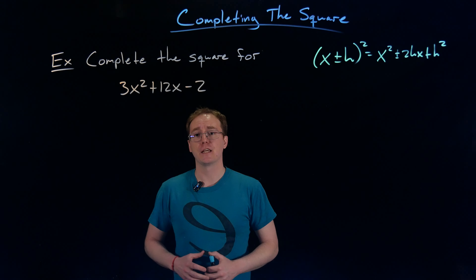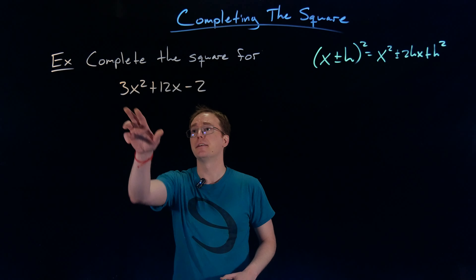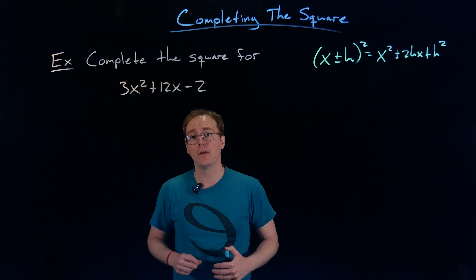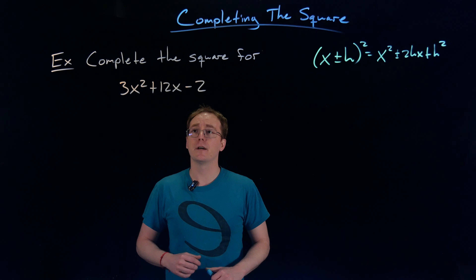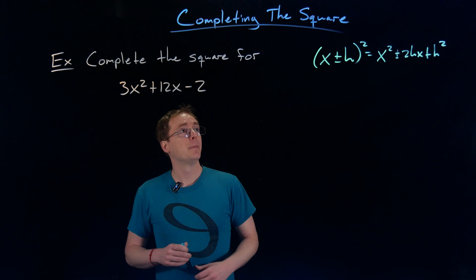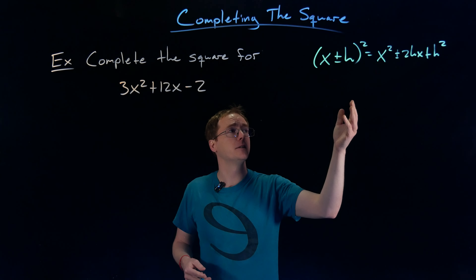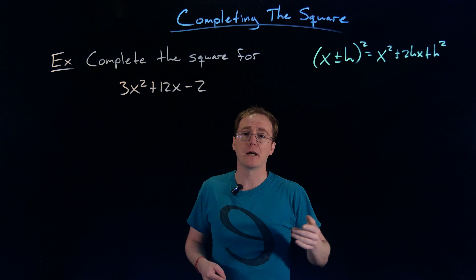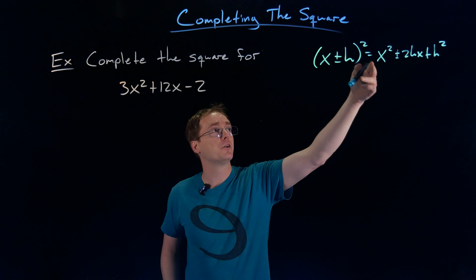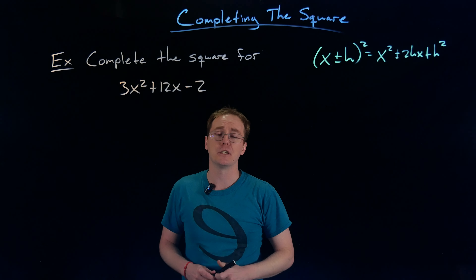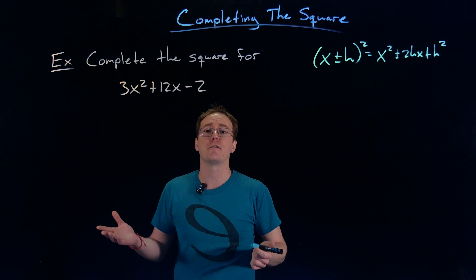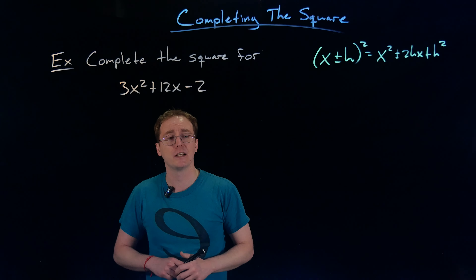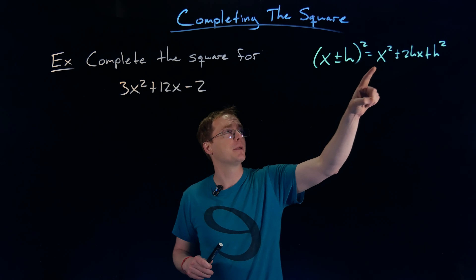All right, let's look at another example of factoring by completing the square. This one's going to be trickier because now we don't have that leading coefficient of positive 1 that always makes the problems a little bit easier to work with. In this example, we're trying to complete the square for 3x squared plus 12x minus 2. That pattern we're trying to exploit — going from a binomial squared to a perfect square trinomial — usually starts by thinking about that perfect square trinomial as having just an x squared, or a leading coefficient of positive 1. So if we do have something other than positive 1 in front of our x squared, we usually want to divide or factor it away.